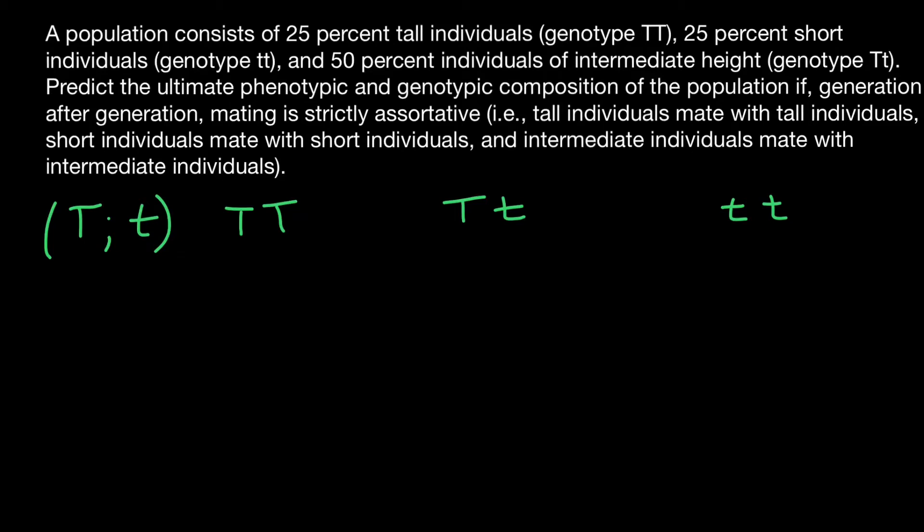And of course it is predictable when we have two tall parents that 100% of the progeny also going to be tall. So this is easy to understand.